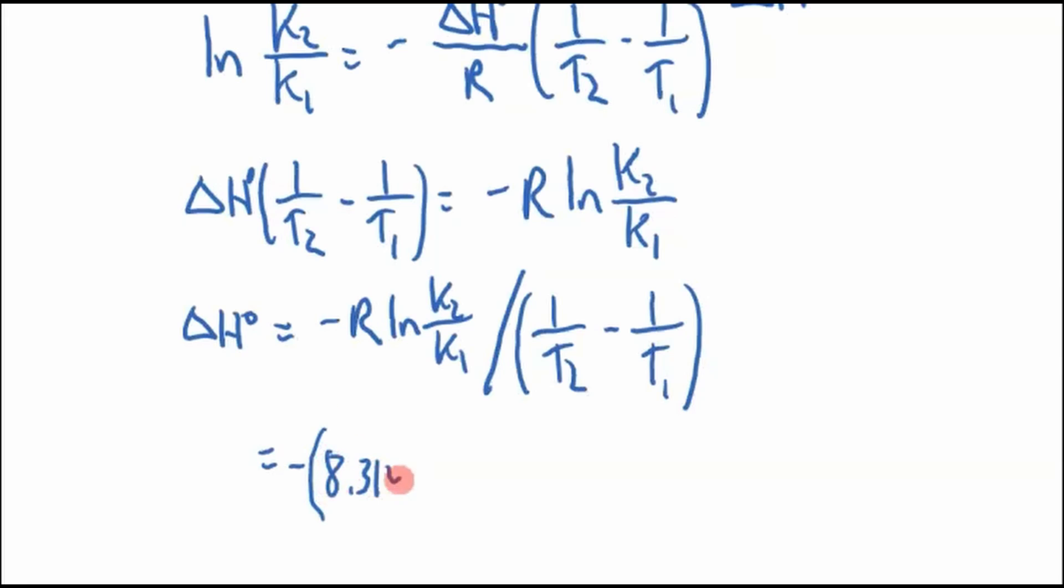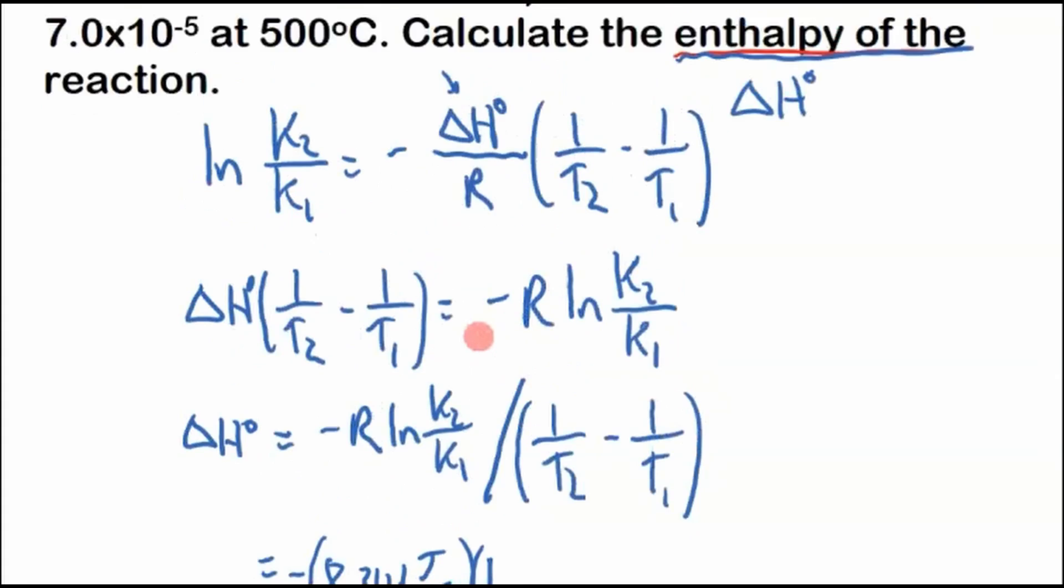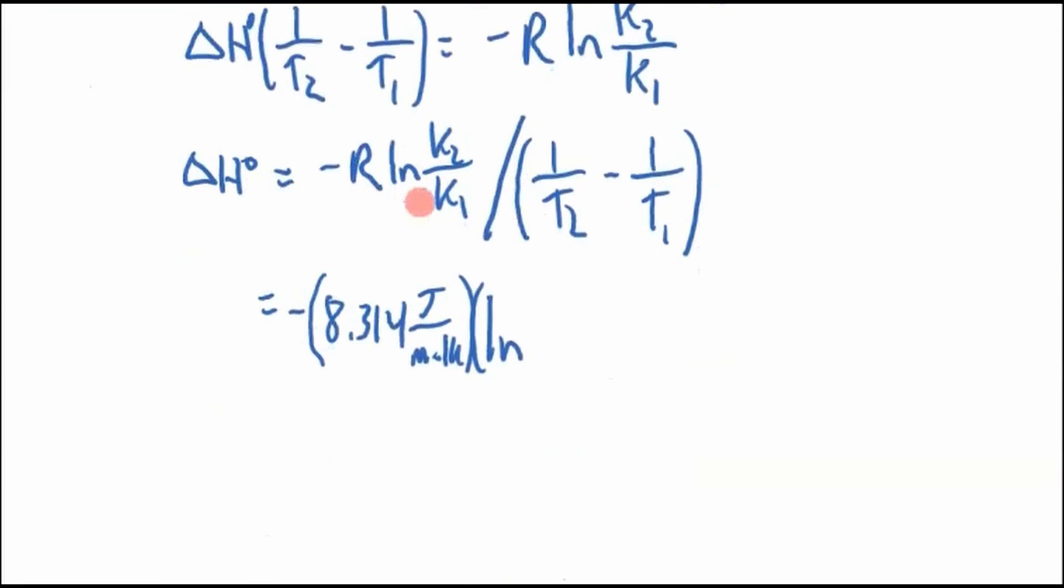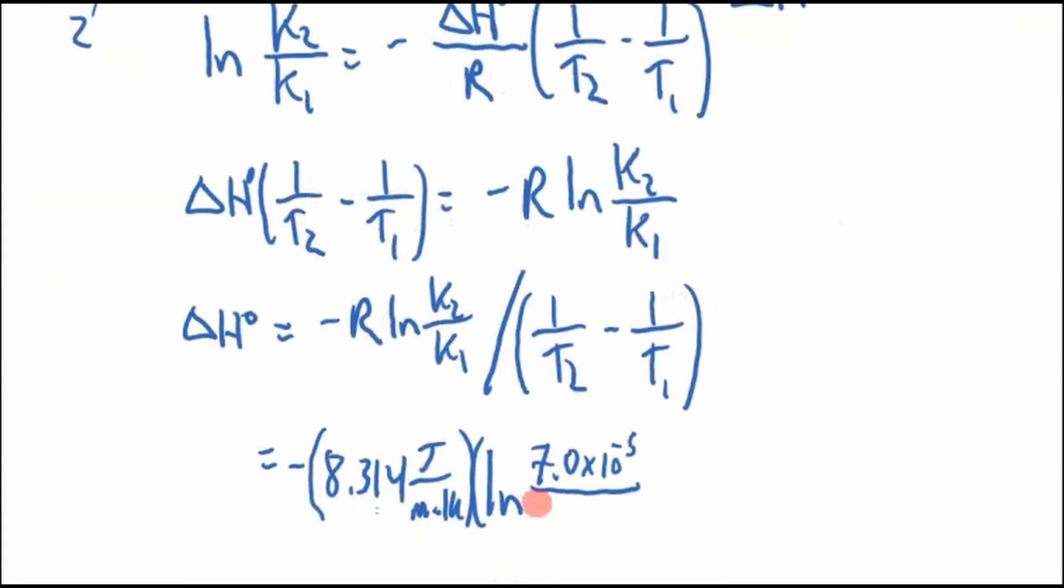So negative R, now R is 8.314. We want to make sure we use the R with joules because we're solving for change in enthalpy which has units of energy. ln, now we need to choose which is our 2s and which is our 1s. Let's choose this as our 1s and this data set as our 2s. So K2 would be 7.0 times 10^(-5) and K1 is 5.4 times 10^5.